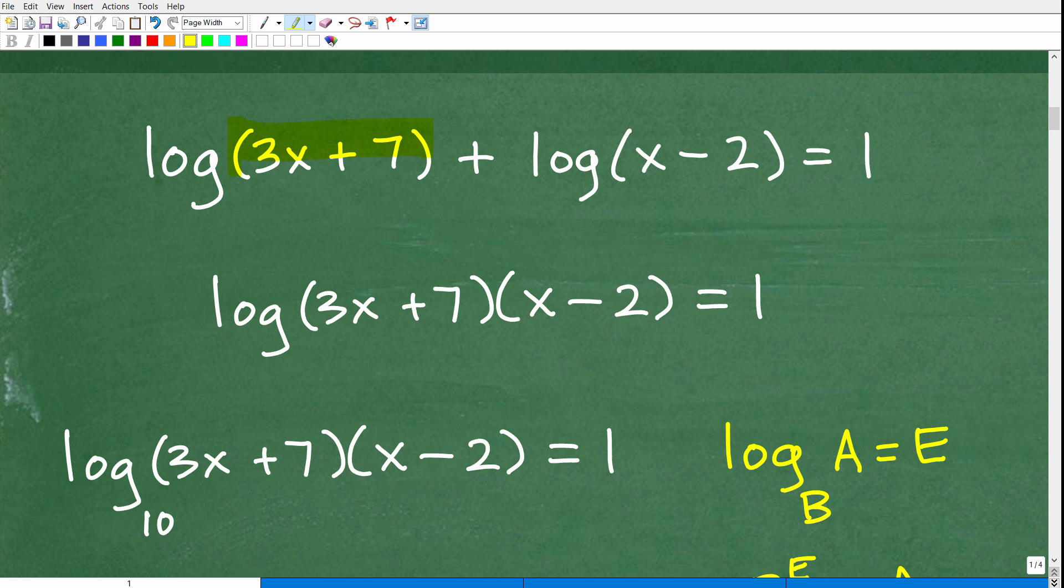Here we have log 3x plus 7 plus log of x minus 2. Now, one thing when you have log, this is what we call the common log. The base down here is actually base 10. As long as these are the same, I can condense this expression. In other words, I'm thinking this plus this must have came from log base 10 of 3x plus 7 times x minus 2.